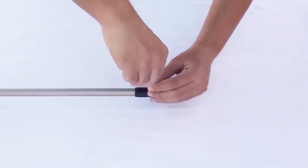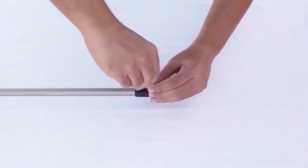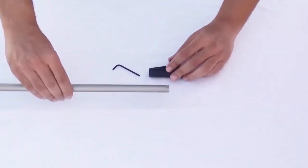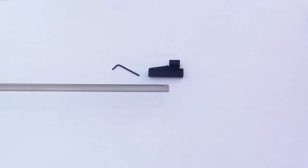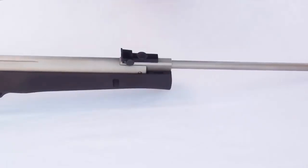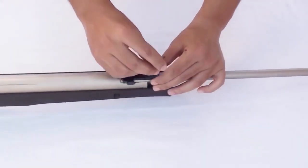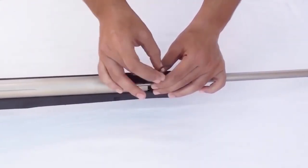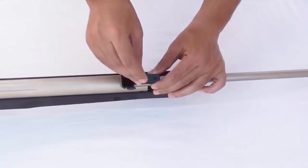Loosen the screw on the front side using a 2.5 millimeters Allen key and slide it off. Loosen the screws on the rear side using a 2.5 millimeters Allen key and remove it.